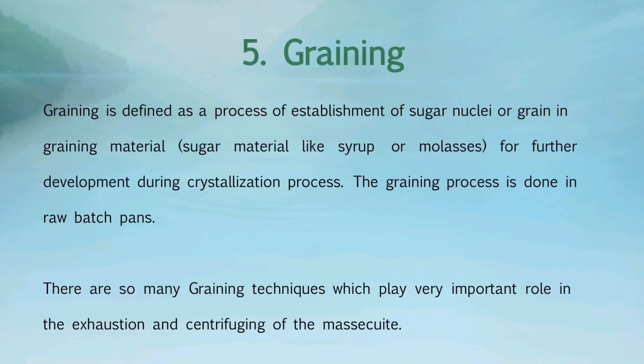Now, move towards the next process named as graining. Graining is defined as a process of establishment of sugar nuclei or grain in graining material for further development during the crystallization process. The first graining process is done in raw batch pans. There are so many graining techniques which play a very important role in the exhaustion and centrifuging of the massecuite.